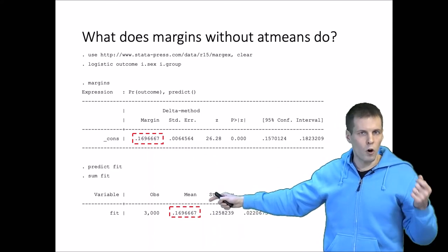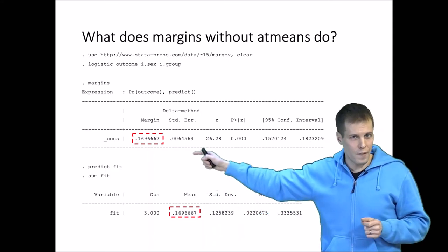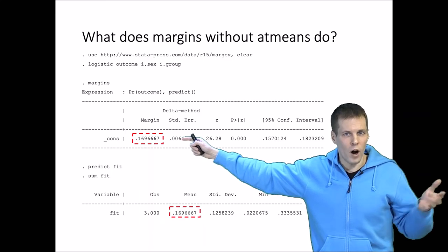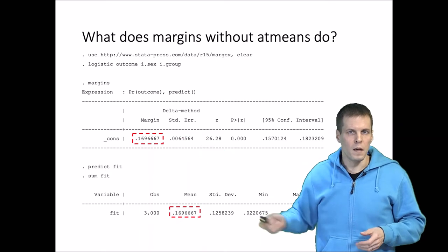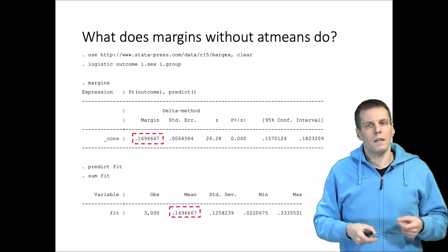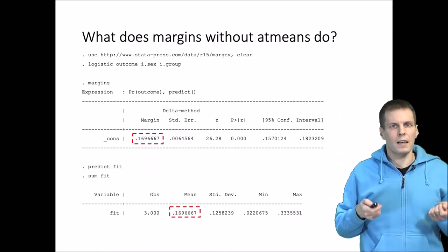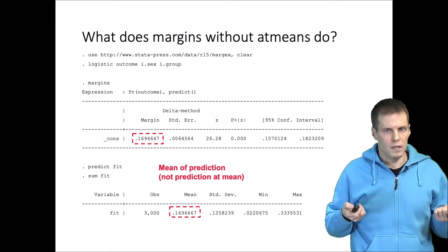This is the mean of the predicted values, and this is the average marginal prediction as Stata calls it, or average adjusted prediction, which is perhaps the better term. They are the same, and now the question is what exactly is adjusted when we do adjusted predictions.